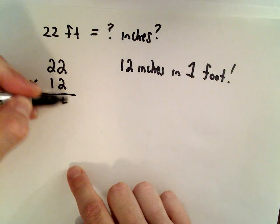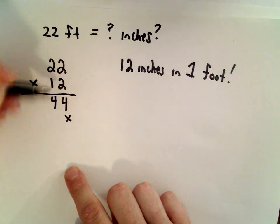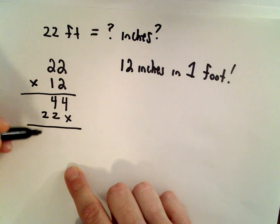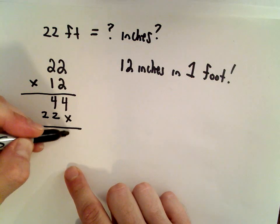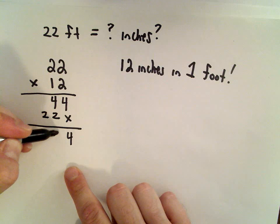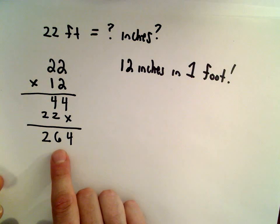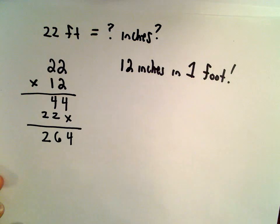So 2 times 2 is 4, 2 times 2 is 4, 1 times 2 is 2, 1 times 2 is 2. I'm going to add those together - so 4 plus 0 will be 4, 4 plus 2 will be 6, 0 plus 2 will be 2. So there's 264 inches in 22 feet.